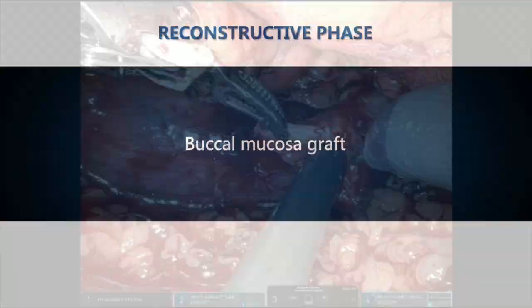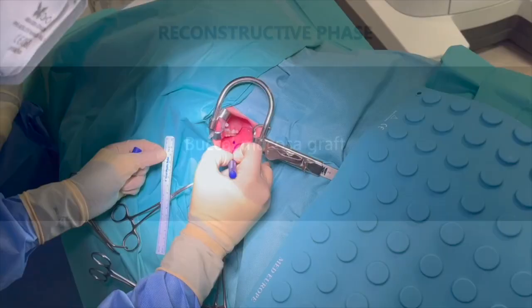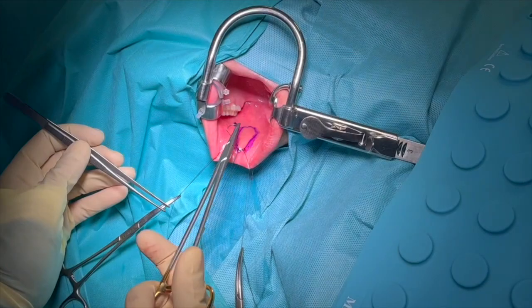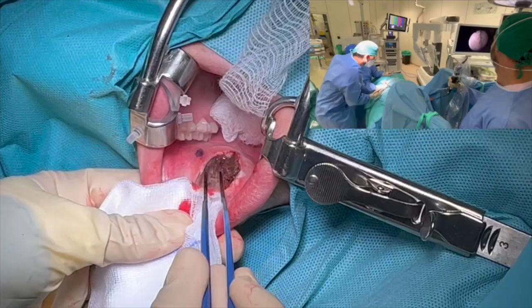The buccal mucosal graft is prepared before the beginning of the robotic phase of the surgery. A 3 by 1 cm surface of the oral mucosa is contoured. The mucosal graft is cut with forceps and defatting of the graft is performed.